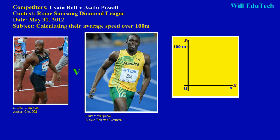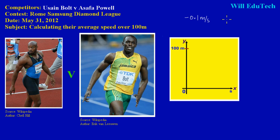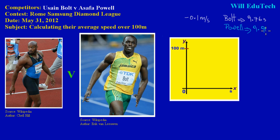Now let's make a quick note of their times. This race was done in a negative 0.1 meters per second wind. Bolt ran 9.76 seconds and Powell ran 9.91 seconds. That's the time it took both men to complete the 100-meter dash. Let's look at their average speed.